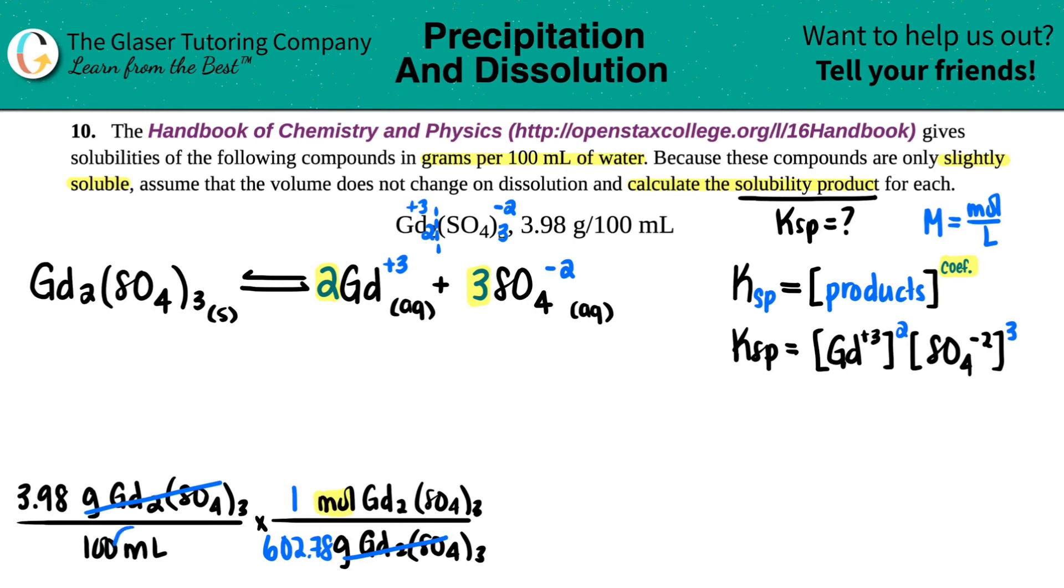I have to convert the mils into liters. So times by a ratio. We don't want mils. So that goes on the top now because I want it to cancel. And then remember for mils and liters, it's always a thousand mils equals one liter. The mils cancel out. We're now with liters. So we have the units for molarity. So let's see. 3.98 divided by 100 divided by 602.78 times a thousand. I guess I'll put this into scientific notation. 6.603 times 10 to the negative two. And this is moles per liter, which is the same as molarity. And that's the starting one.